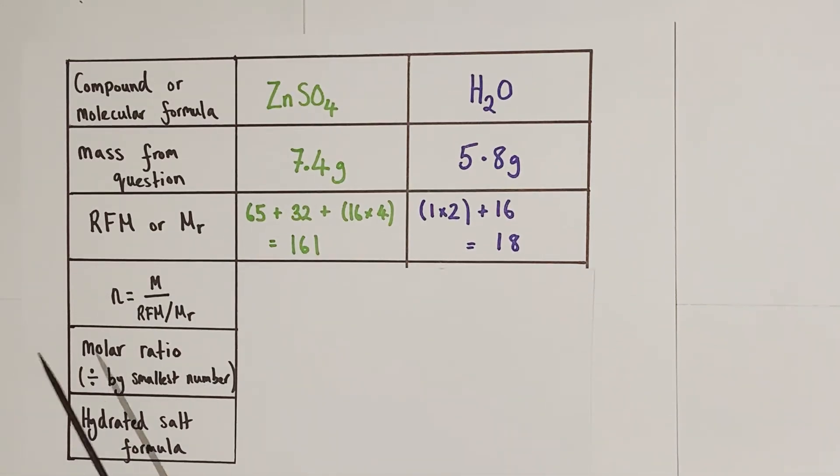Now we're going to work out what this symbol n means. n is the algebraic symbol used to denote the term mole. We're going to calculate the number of moles of zinc sulfate, the number of moles of water present using our molar triangle formation. So moles is equal to mass divided by the relative mass of the substance being investigated.